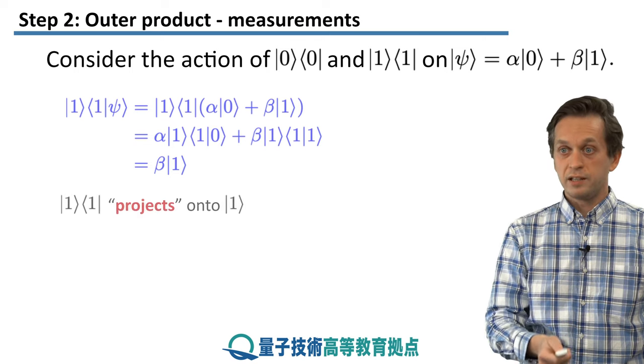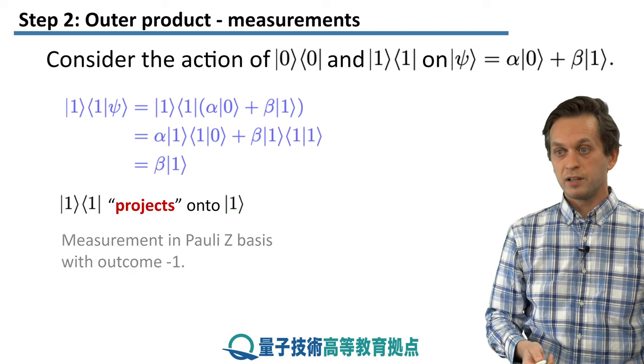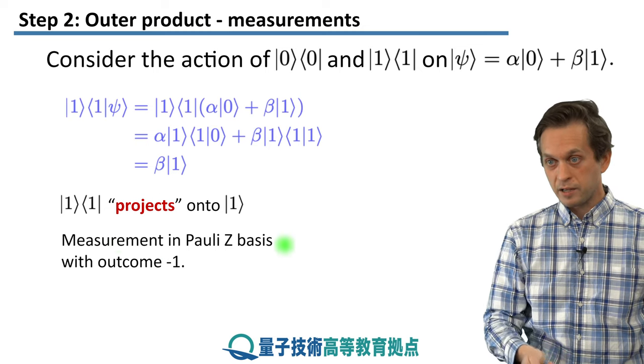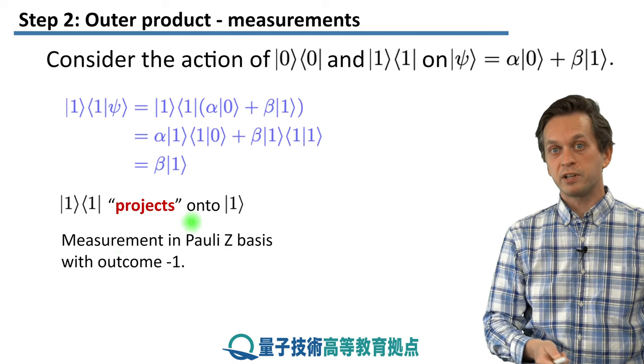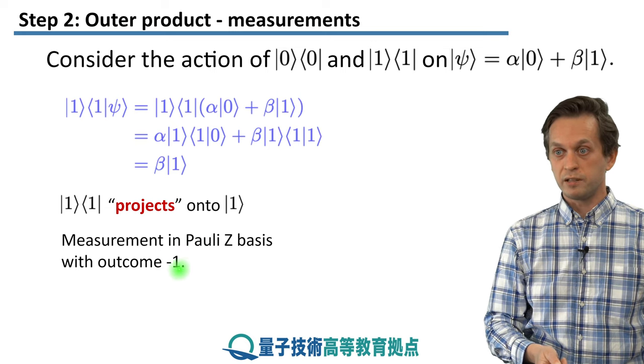So we see that the outer product of 1 projects onto the state ket 1. So it encapsulates the effect of measuring in the Pauli-Z basis, where the outcome of the measurement was negative 1.